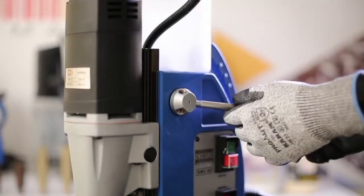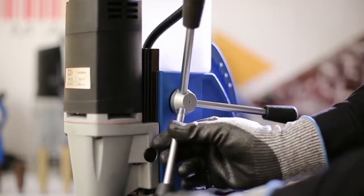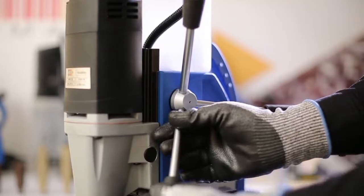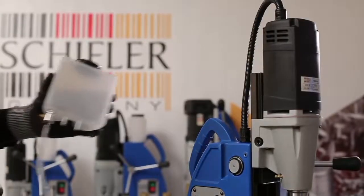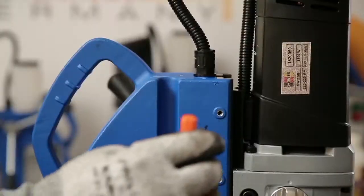Install slide handles as shown. Mount coolant bottle on top of the machine. Adjust slides.